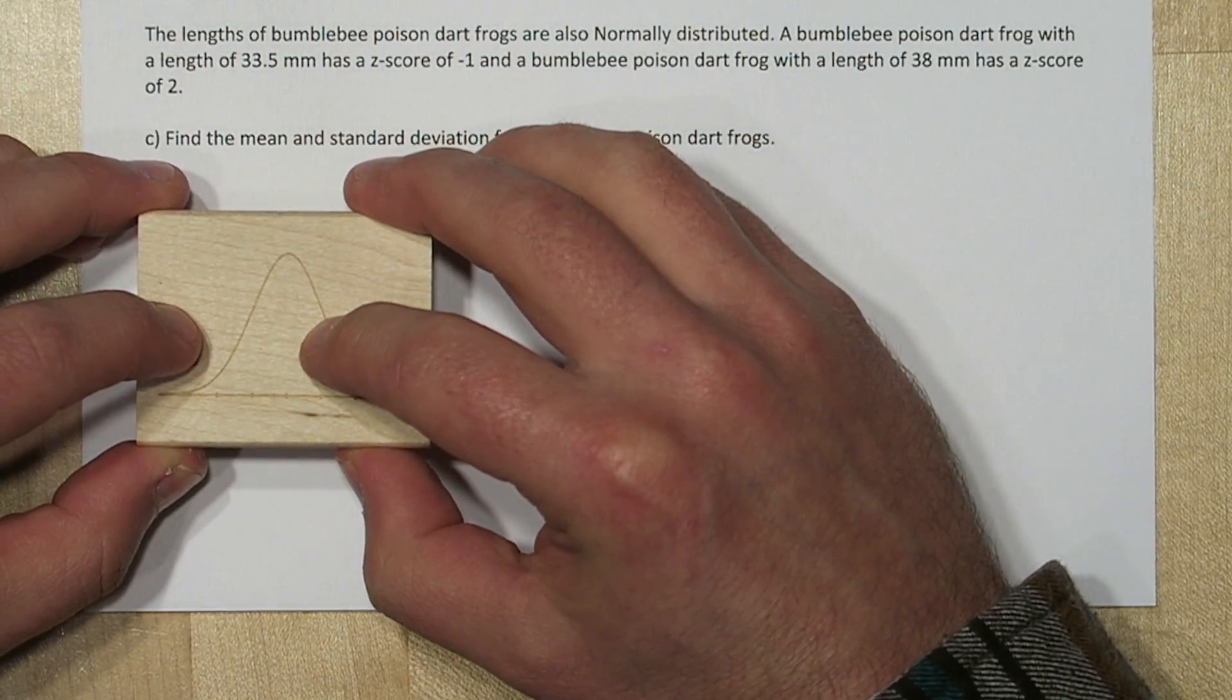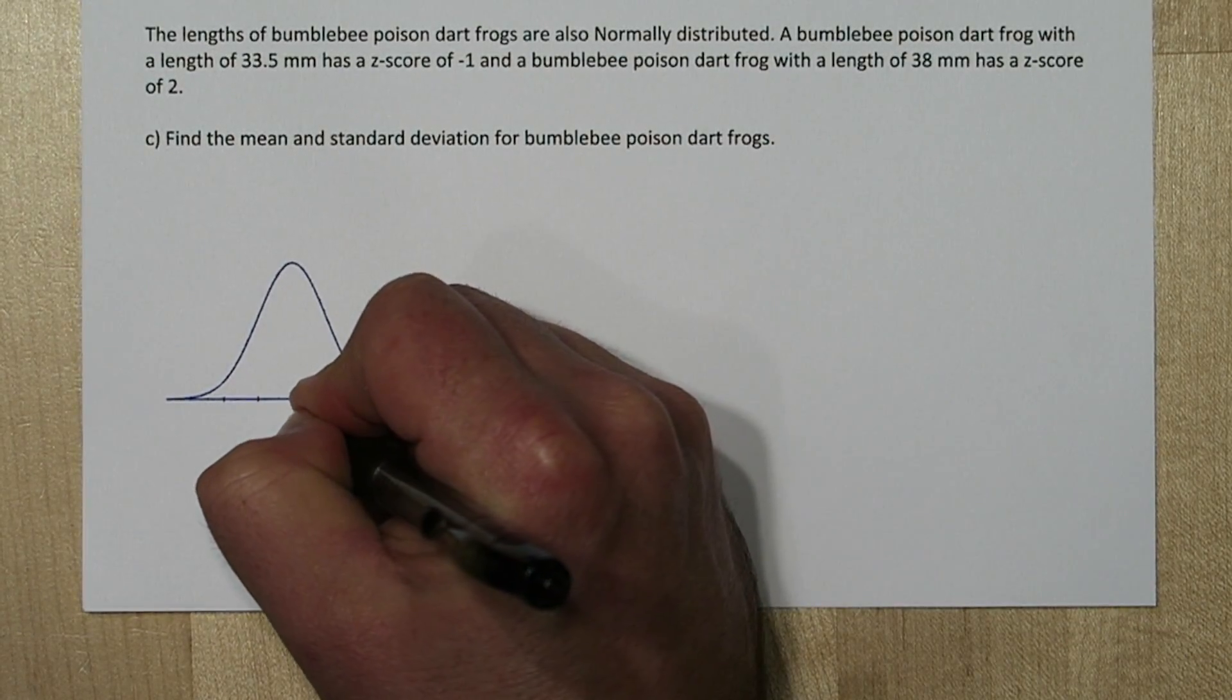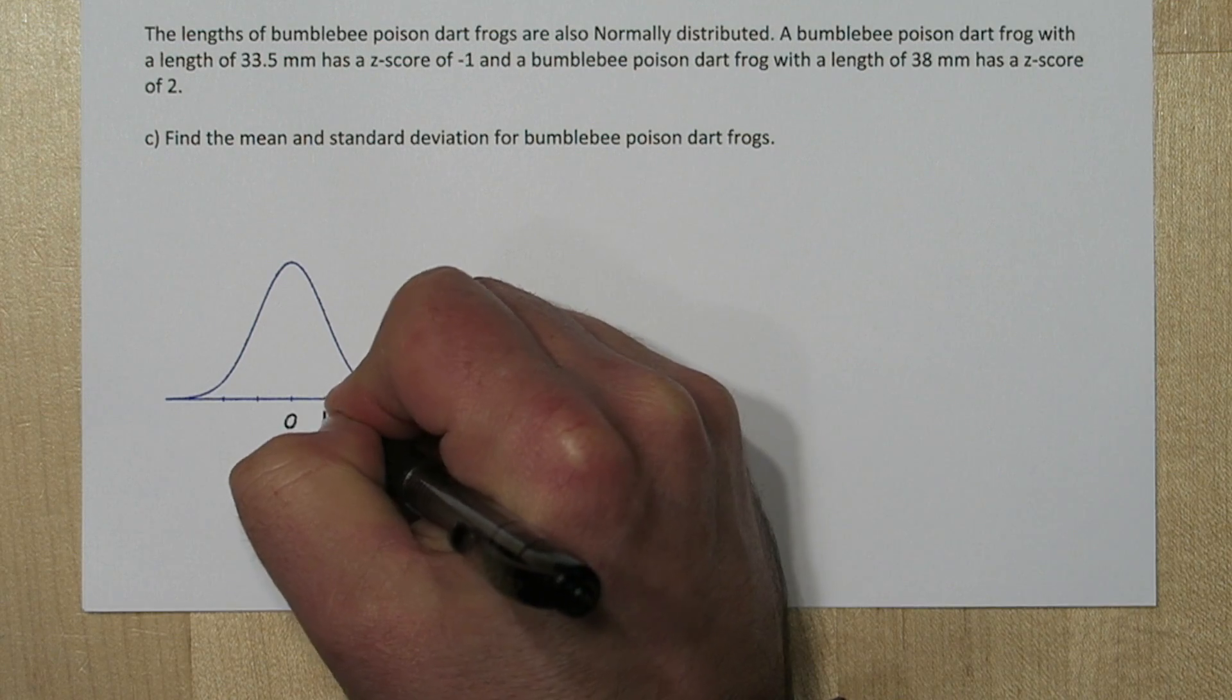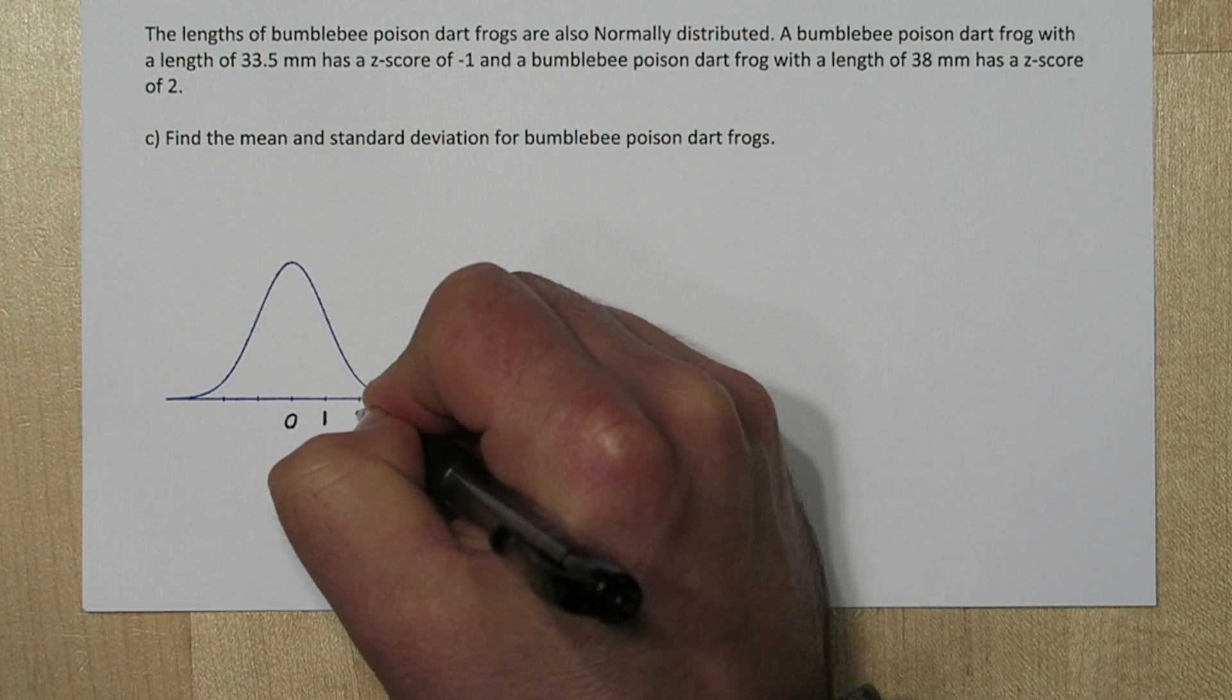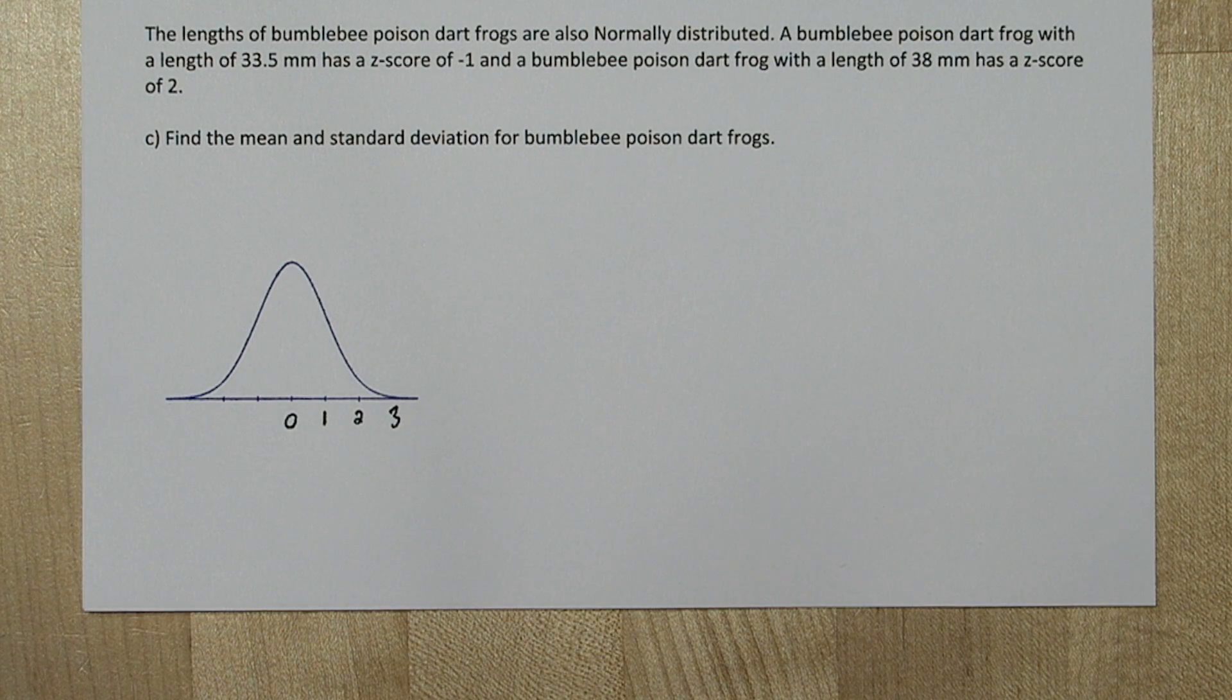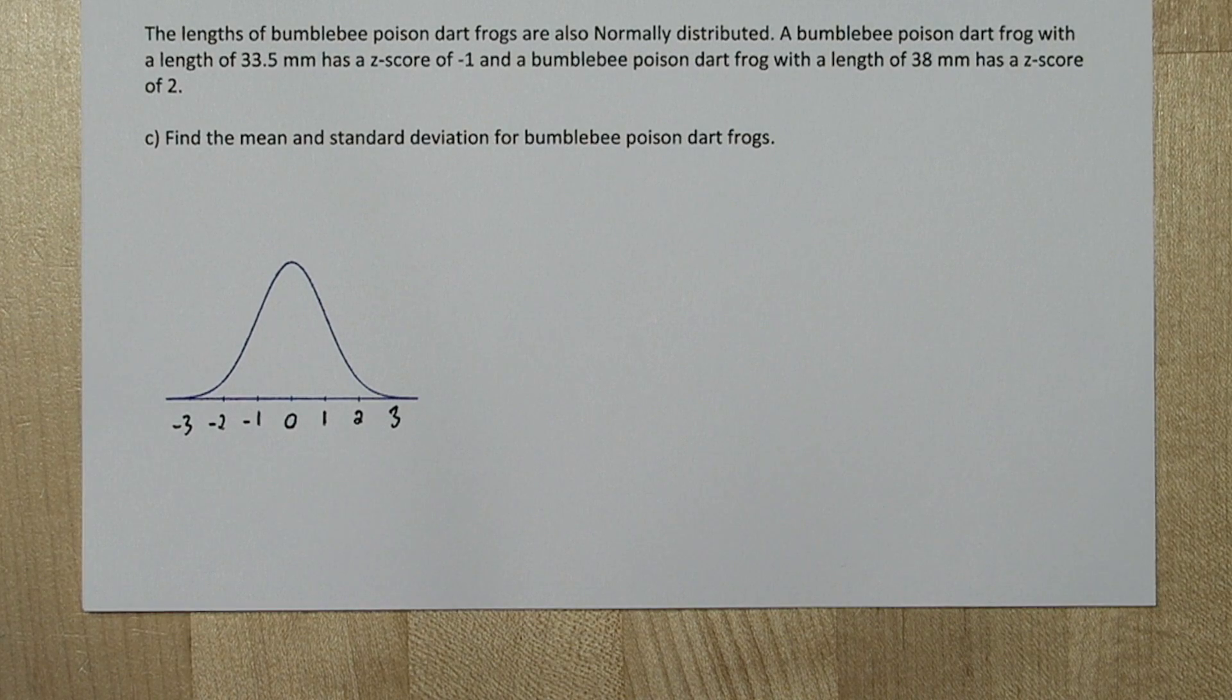For part c, we're also going to stamp a normal distribution. And let's start by labeling the axis with z-scores. So right in the middle of the mean, we'd have a z-score of 0. One standard deviation above would be a 1. Two standard deviations, three standard deviations. And to the left of the mean, we have our negative z-scores.